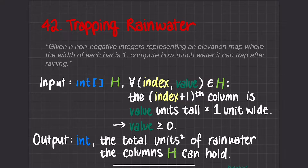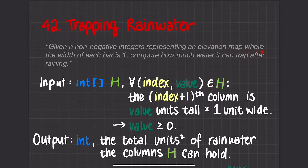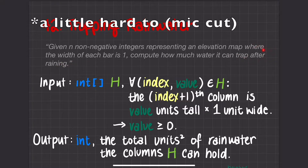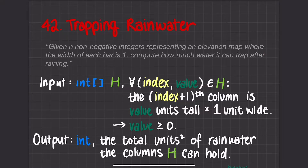First, let's go over the question itself. In the description of LeetCode, this is what it says: given n non-negative integers representing an elevation map where the width of each bar is 1, compute how much water it can trap after raining. I find that this is a little ambiguous and hard to interpret, so I put it in my own words for your convenience.